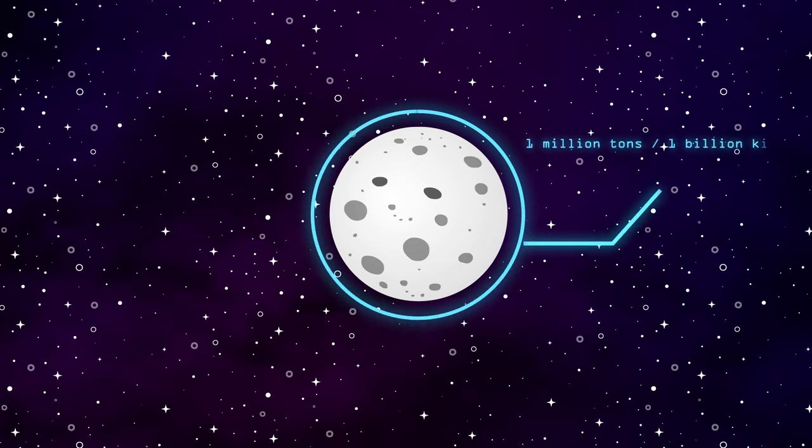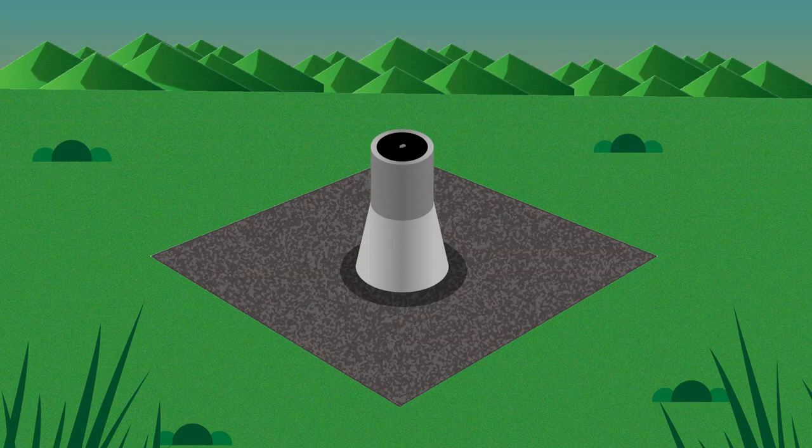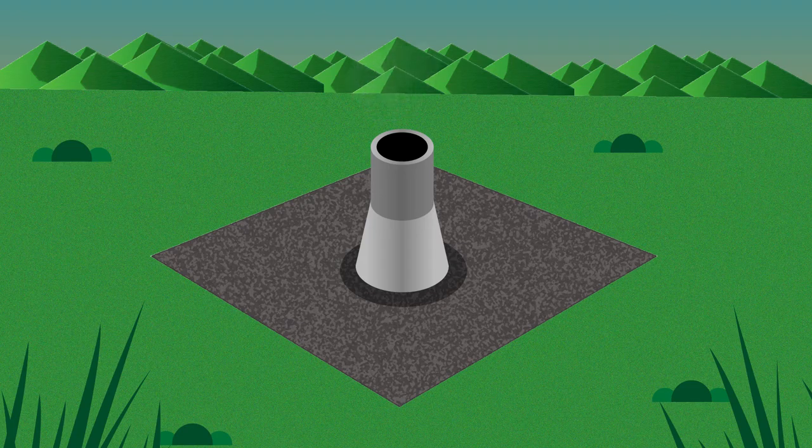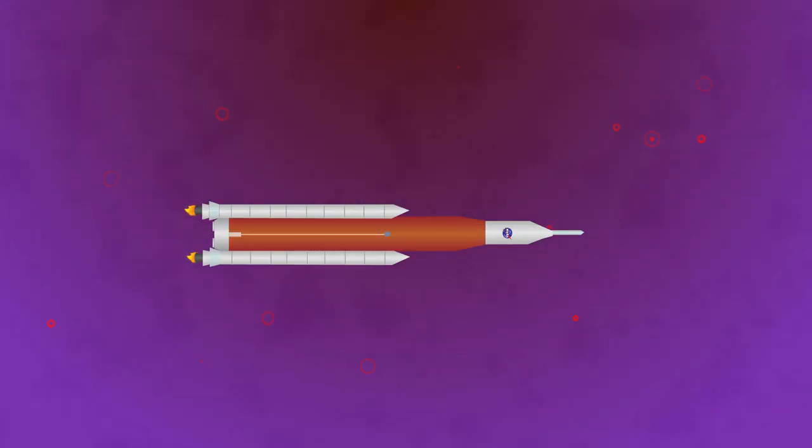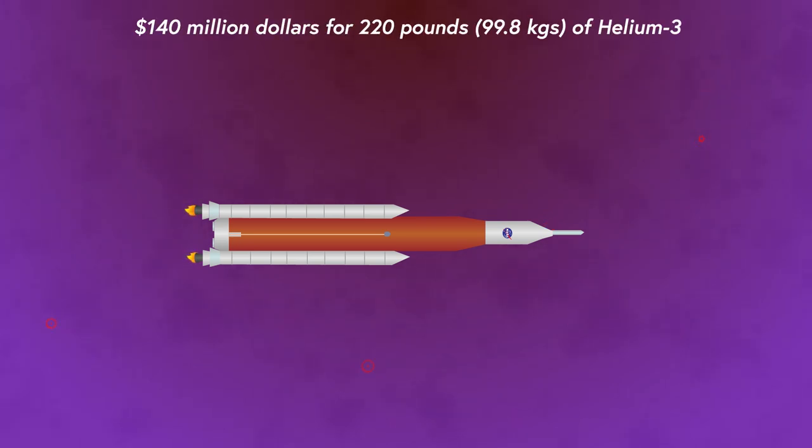The moon is estimated to contain around 1 million tons of helium-3, and calculations state that around 25 tons alone can power the United States for a year. Constructing a helium-3 fusion power plant to actually utilize the energy from the isotope would take around 5 billion dollars. And each shipment of helium-3 to the earth, following its extraction from the moon, would cost around 140 million dollars for roughly 220 pounds of helium-3.